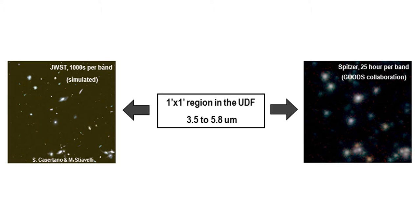This is another illustration of the importance of angular resolution. This is a picture taken by the Spitzer Space Telescope at about four microns of a particular field in the sky, and this is a simulation of what JWST will see at that same field. You can see how much more detailed the JWST image will be as a result of having this large mirror.